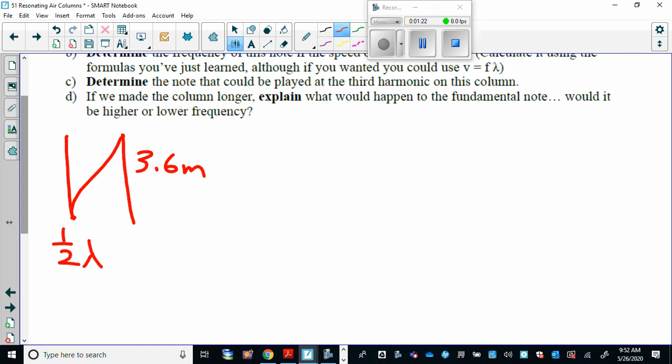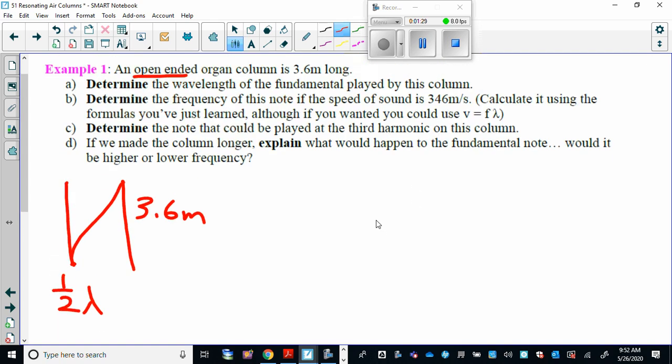So if one half of a wavelength fits in a pipe that's 3.6 meters long and the question is asking for determine the wavelength of the fundamental column, that's a pretty straightforward question. If half a wavelength fits in a pipe of 3.6, if I wanted a full wavelength, how much would it be? 7.2. So the wavelength would have to be 7.2 meters.